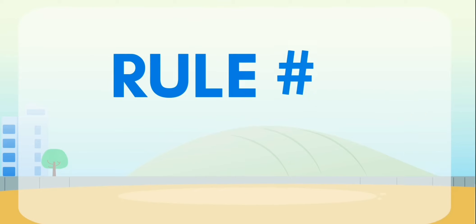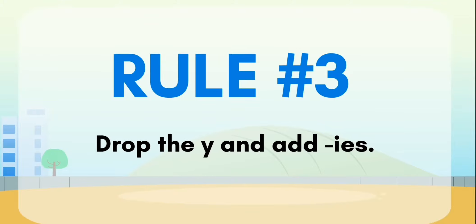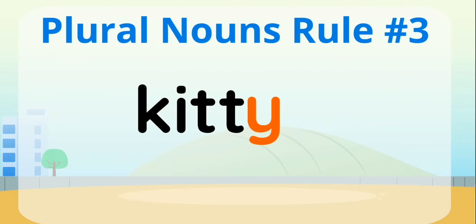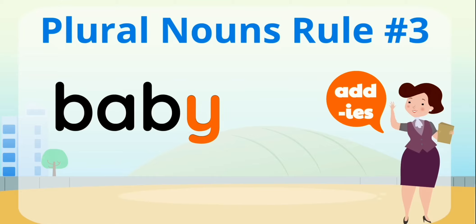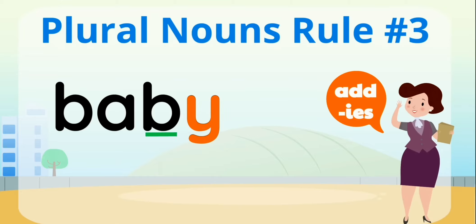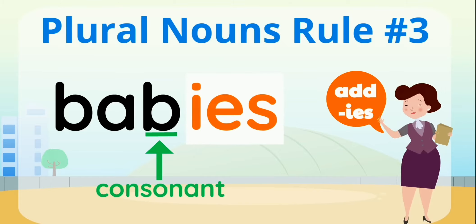Now let's look at the final rule we will cover in this video. Rule number three: drop the y and add ies. Look at this word here, kitty. When the y follows a consonant, drop the y and add ies. Just so you know, a consonant is a letter that is not a, e, i, o, or u. Let's take a look at this word, baby. Y follows b. B is a consonant. So let's drop that last letter, y, and add ies. Babies, we have many babies.